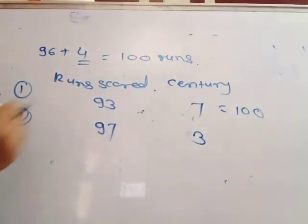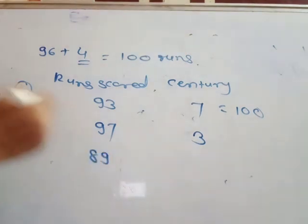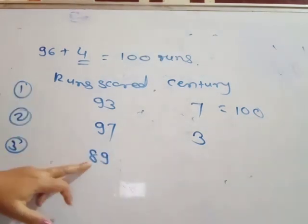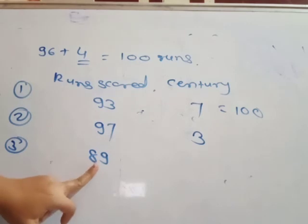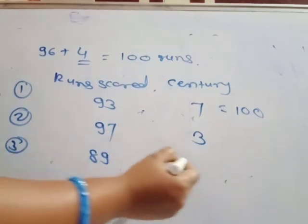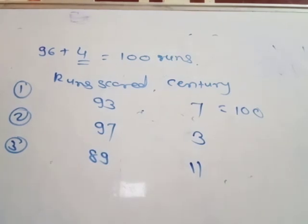Player 3 scored 89. How many runs needed here? 11 more runs. 89 plus 11 is equal to 100.